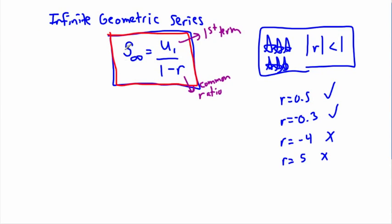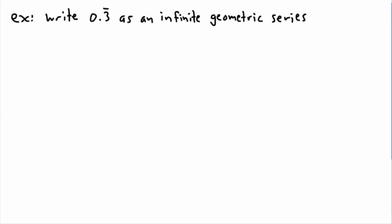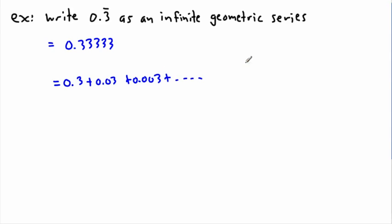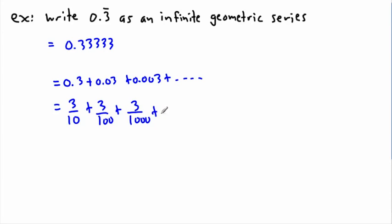Now let's do a two-part example. First, write 0.3 repeating as an infinite geometric series. Well, 0.33333... going on forever is the same as 0.3 plus 0.03 plus 0.003, and so on. Writing as fractions: that's 3 over 10 plus 3 over 100 plus 3 over 1000, and so on. That's all we need for the first part.